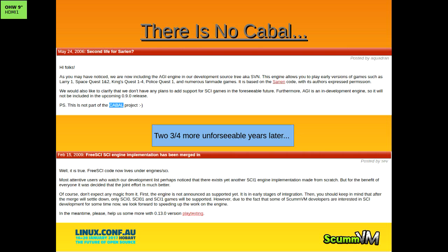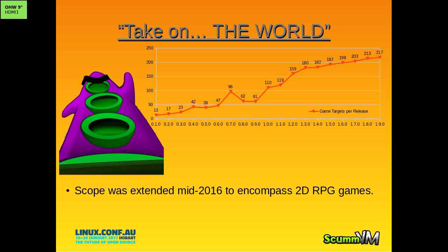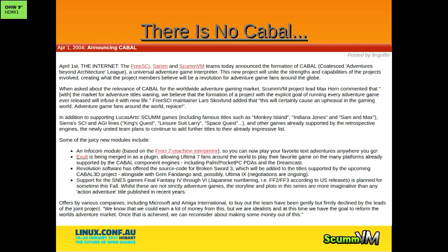The growth of the project was pretty astounding recently. A lot of original rights negotiations helped, but also a lot of reverse engineering still goes on. When we first started it was 13 SCUM games and Simon the Sorcerer - up to now 217 game targets. The scope of the project was extended in mid-2016 to encompass 2D RPG games. Final Fantasy... hmm, that's in scope now. Pull request welcome.